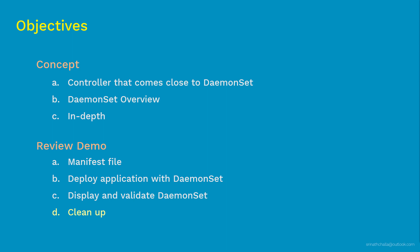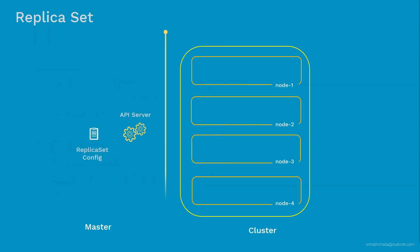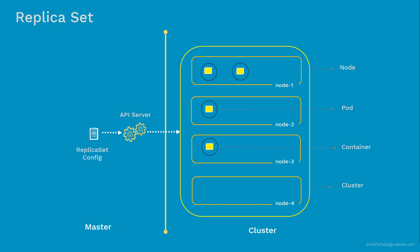Let's get started by revisiting ReplicaSet. ReplicaSet ensures that a specified number of pod replicas are running at any time based on the configuration defined in the spec file. In the example, we see two pods deployed on the same node. Once we submit the ReplicaSet to the API server, it's up to the scheduler how pods are scheduled inside the Kubernetes cluster. Now let's assume we have a requirement to deploy a monitoring app on every node, and we can't have two instances running on the same node.